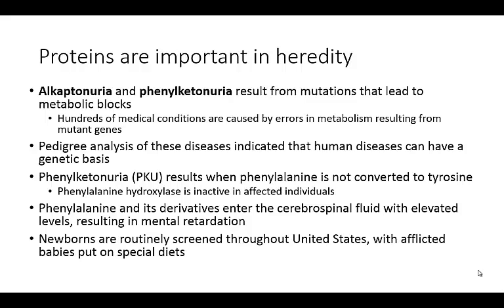Alkaptonuria and phenylketonuria are going to result from mutations that lead to metabolic blocks, as I'll show in just a second. There are hundreds of medical conditions that can be caused by errors in metabolism resulting from different mutant genes, and there's still a lot of study going on trying to figure out what genes cause different diseases. These ones, though, are particularly clear.